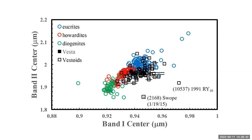Here's a plot of band one center versus band two center for all objects — HEDs (Howardites, Eucrites, Diogenites) versus the Vestoids, temperature-corrected. They overlap reasonably well with a slight offset, maybe because the temperature correction isn't perfect, but it matches pretty well. Two objects fall off: 10537 (1991 RY16) and 2168 Swope. 1991 RY16 is known to have an olivine component from the spectra, so it plots anomalously. We couldn't find any good reason why Swope plots anomalously, so we left it in. The V-types tend to overlap the eucrites and Howardites but don't really overlap the diogenites — which we found very interesting.